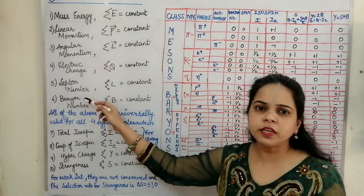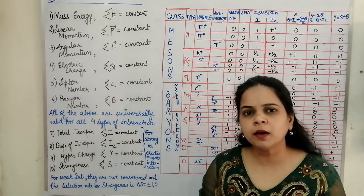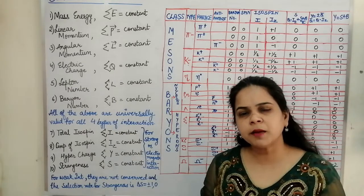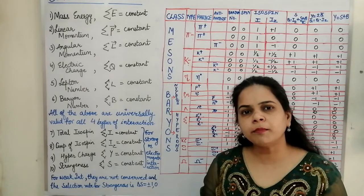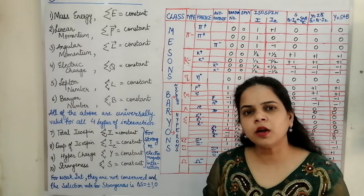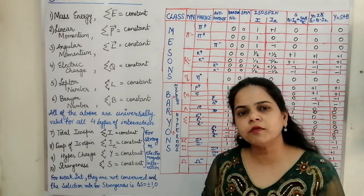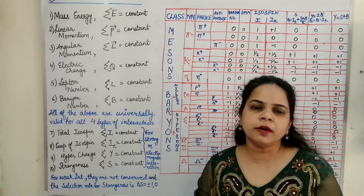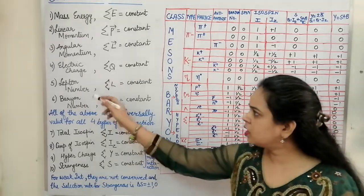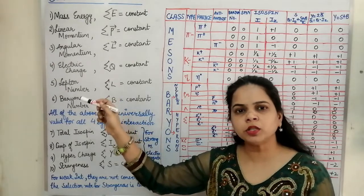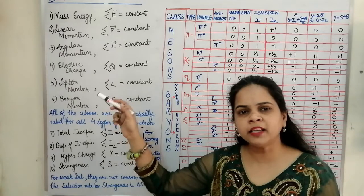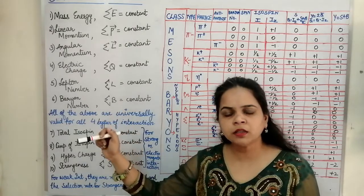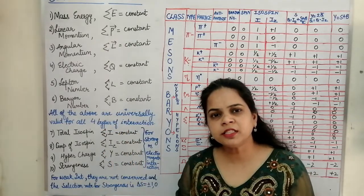Next is the conservation of lepton number. The lepton number on the reactant side must equal the lepton number on the product side. It is never possible for a process to occur if the lepton number is not conserved. The lepton family includes electrons, positrons, mu minus, mu positive mesons, and neutrinos.